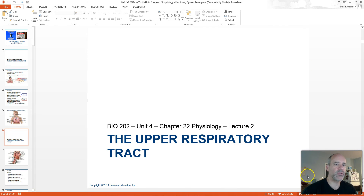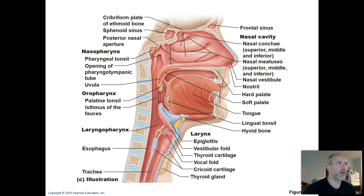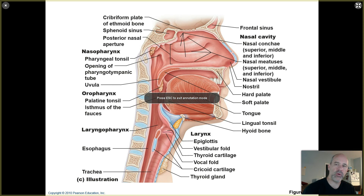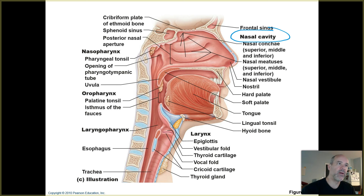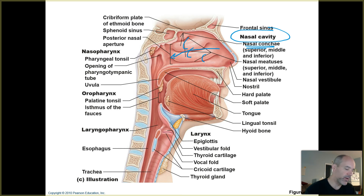We're going to move on to lecture number two and talk more about what's happening in your upper respiratory tract. The anatomy will be covered on the anatomy side, but just to review: your upper respiratory tract consists of the nasal cavity and features such as your nasal conchae, which are folds inside the nasal cavity. You breathe in air through your nostrils, and that leads to the pharynx, which extends downward and is divided into three parts.